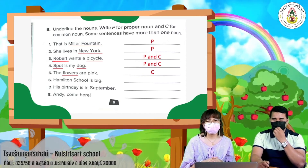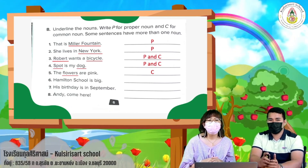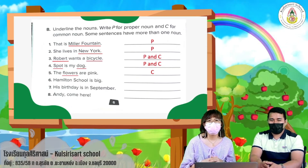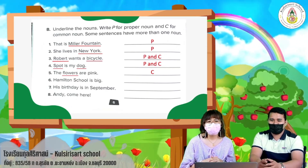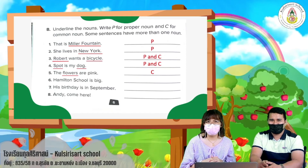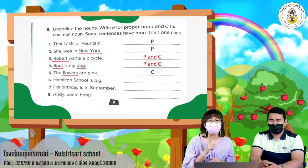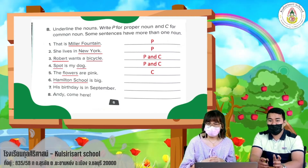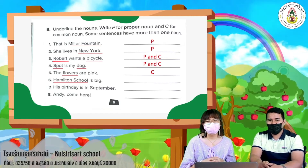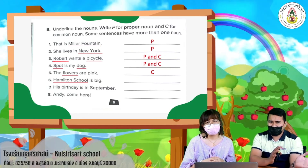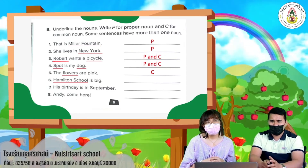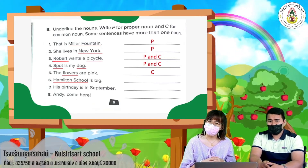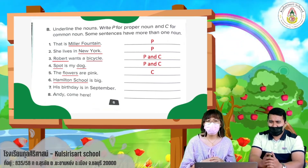Number six: 'Hamilton School is big.' In this sentence we have one noun — Hamilton School. Is it common noun or proper noun? It's a proper noun.